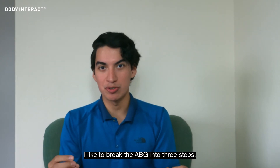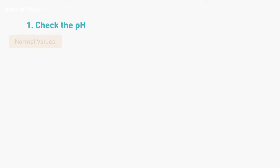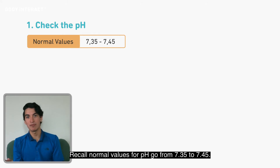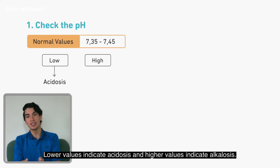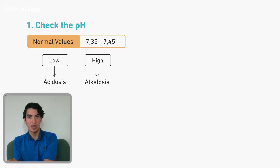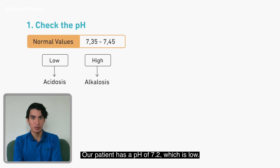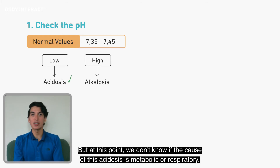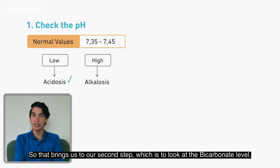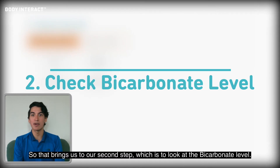I like to break the ABG into three steps. The first step is to look at the pH. Recall that normal values for pH go from 7.35 to 7.45 — lower values indicate acidosis and higher values indicate alkalosis. Our patient has a pH of 7.2, which is low and therefore indicates acidosis, but at this point we don't know if the cause of this acidosis is metabolic or respiratory. So that brings us to our second step, which is to look at the bicarbonate level.